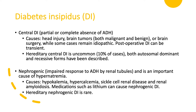Nephrogenic DI is more common than central diabetes insipidus. It is the result of impaired response to vasopressin or ADH by the renal tubules. The collecting tubule does not respond to ADH, and therefore you have water diuresis. There is vasopressin — the posterior pituitary is making vasopressin — but the kidneys' collecting tubules are not responding.